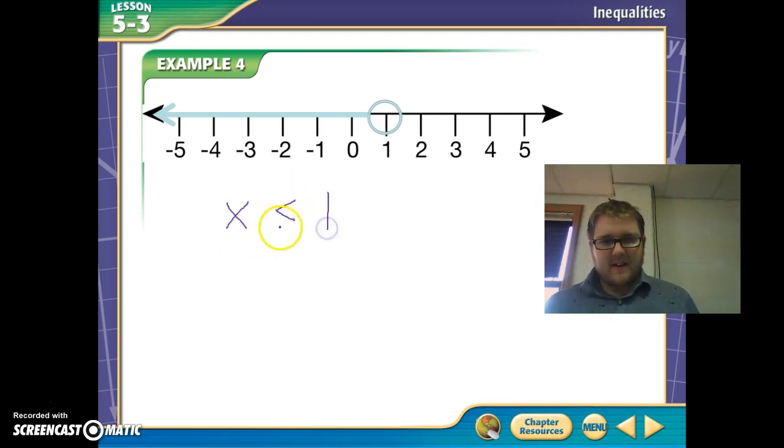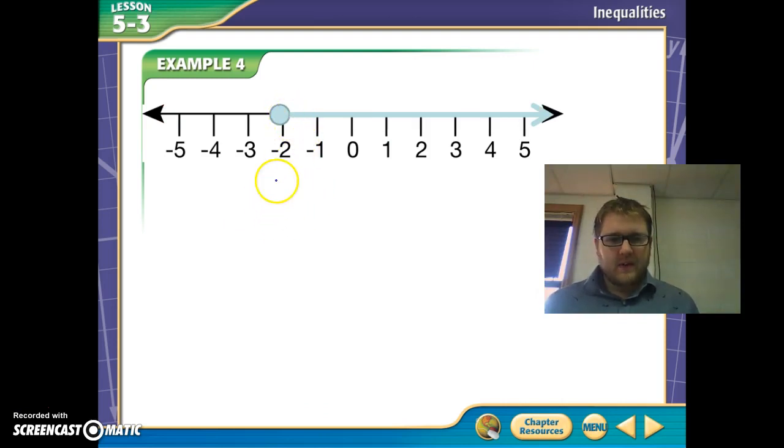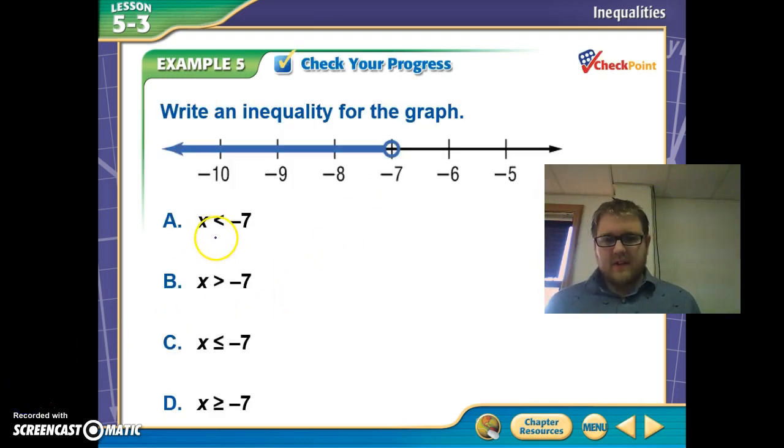Is it equal to? No, because if it were equal this would be shaded. So looking at this graph we see that negative 2 is shaded. So we're going to say X is greater than or it could possibly be equal to negative 2. So go ahead and see if you can come up with the inequality that this graph represents.